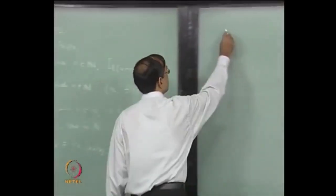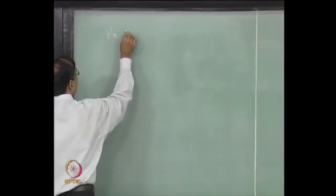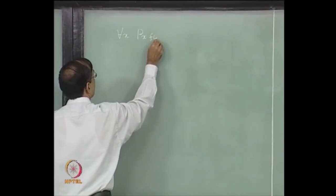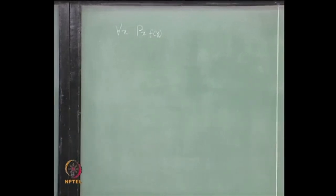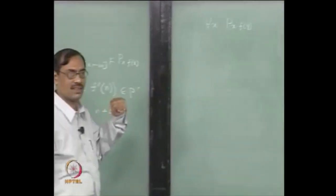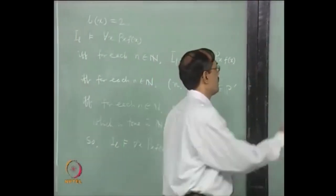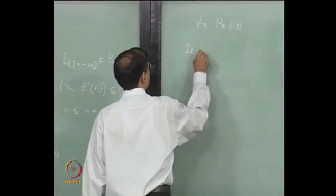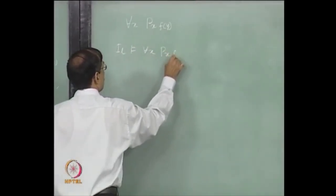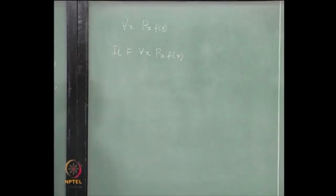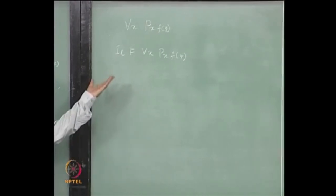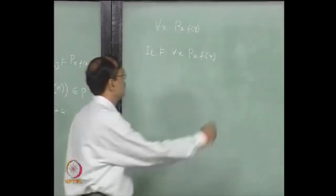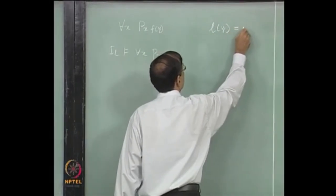Now let us see another example where the formula is not a sentence. Suppose we consider ∀x P(x, f(y)). Here y is a free variable — it has not been quantified. With the same interpretation, let us fix l the same way but also specify l(y) = 100.